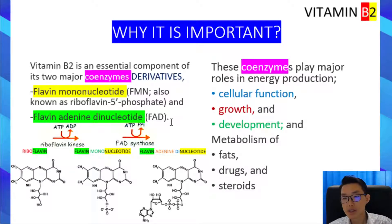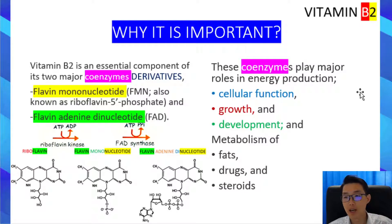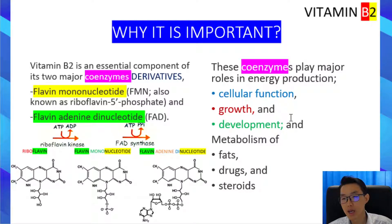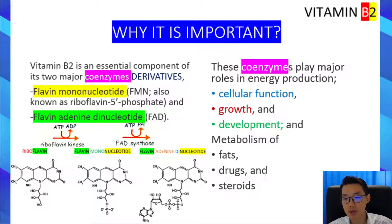These coenzymes play an important role in energy production. As we all know, energy is needed for all cellular functions, for growth, and for development. It is also important for the metabolism of fats, drugs, and steroids.